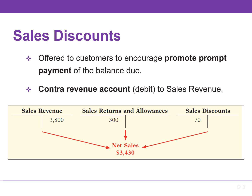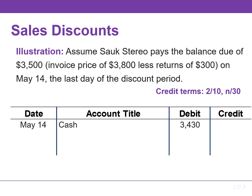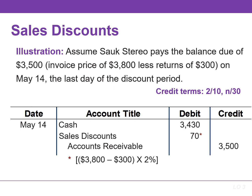Sellers use this account instead of debiting sales revenue to track the amount of cash discounts taken by customers. The entry by PW Audio to record the cash receipt on May 14th, which is within the discount period, is to debit cash for $3,430. We're also going to debit sales discounts — that is calculated by taking the balance due of $3,500 and multiplying it by the 2% discount. The credit to accounts receivable is for $3,500, representing the amount that is due. If the customer does not take the discount, PW Audio simply debits cash for $3,500 and credits accounts receivable for the same amount at the date of collection.